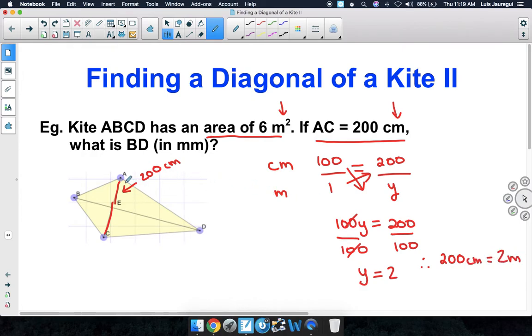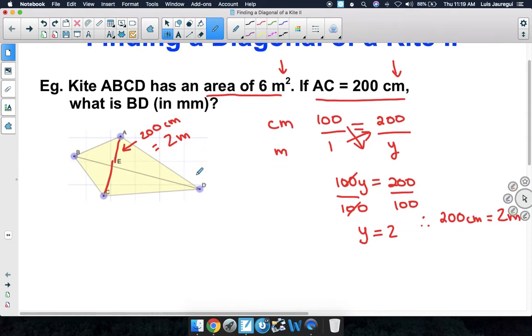Hence, we can say that this diagonal has a length of 200 centimeters or 2 meters. Notice now that we have the same units. Since the area is given, and one of the diagonals is also given, we can relate them through the area formula. Area is equal to 1 half times diagonal 1 times diagonal 2.